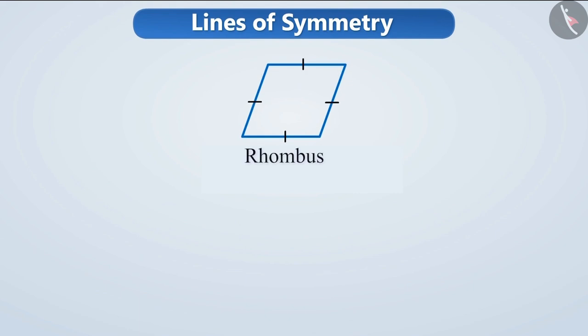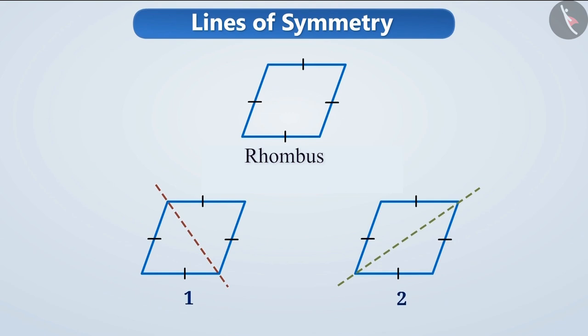If we look at a rhombus, then its symmetry could be seen by folding it through these two lines and, hence, it has two lines of symmetry.